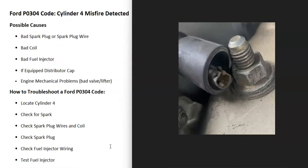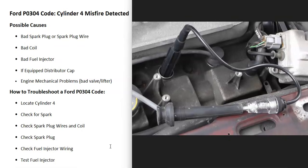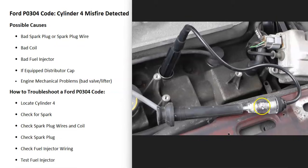One of the first things to do is check whether you're getting any spark going to that cylinder. Some people hold a spark plug wire really close to a ground to see if the spark jumps. The method I like to use is a spark tester tool — one side goes to the spark plug and the other side goes to the coil. Then you start the engine, and if you're getting spark, you'll be able to see it inside the tester. These tools are very low cost, usually less than $10. But be sure to test and make sure you're getting spark going to cylinder number four.